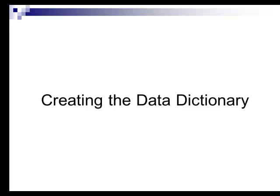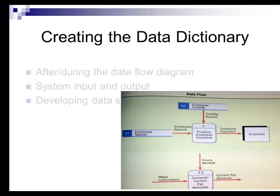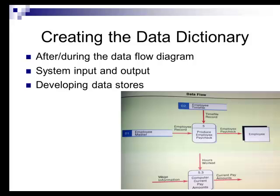A data dictionary is one of the key ways to manage data for departments. The process of creating entries for the data dictionary can start once a data flow diagram is finished or while it is being put together. The data dictionary will continue to be modified as the data flow diagram expands or changes. The main steps for creating the data dictionary are to analyze the input and output through the use of input and output analysis forms and to develop data stores.